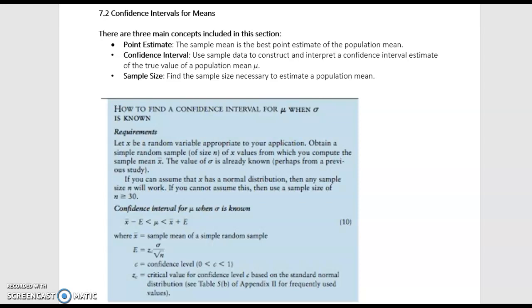There are three main concepts included in this section. We're going to talk about a point estimate for a mean. The sample mean is the best point estimate for a population mean. We're going to talk about confidence intervals using sample data to construct and interpret a confidence interval estimate of the true value of the population mean mu.